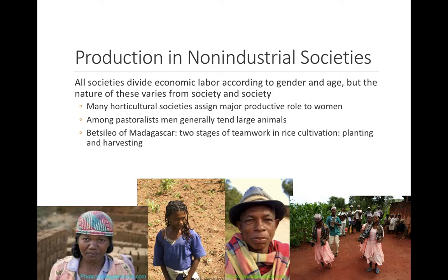Among horticultural societies, most production is done by women — they do most of the gardening labor, producing most of the household food. Men hunt and/or cash crop, or spend time with psychoactive substances and politicking. Among pastoralists, men own and tend the large animals and move them, while women milk the animals and tend to smaller livestock like sheep or goats.